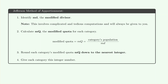In this video, we're going to learn about the Jefferson method of apportionment. Apportionment distributes a certain number of items among certain groups based on the group's population. One method to apportion items is the Jefferson method.